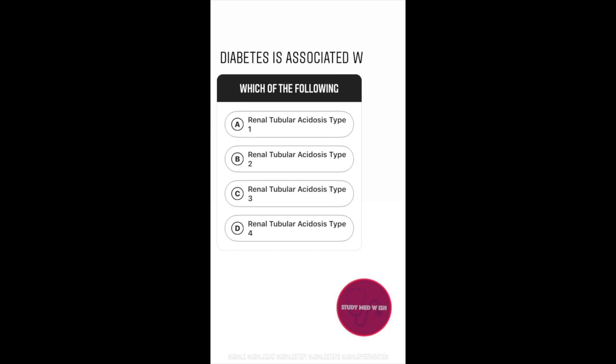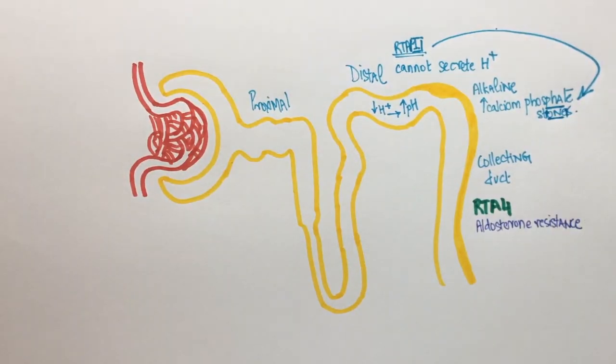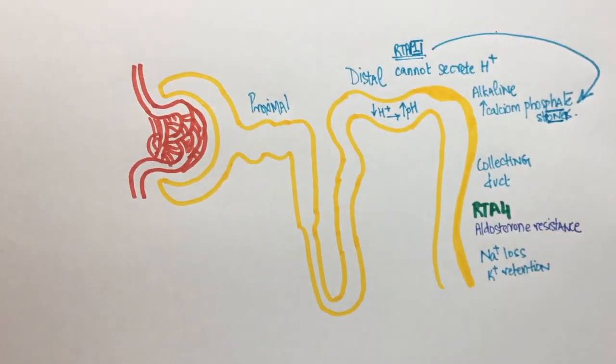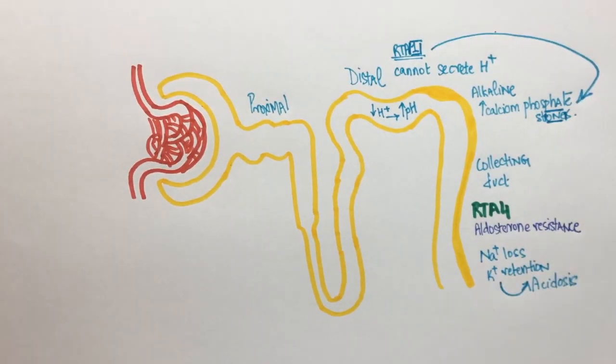The answer to this question is RTA type 4. The mechanism of renal tubular acidosis type 4 is a decrease in the function of aldosterone. This could be brought about by a decrease in aldosterone levels or aldosterone resistance. In the absence of aldosterone, there will be potassium retention by the body which further leads to acidosis.